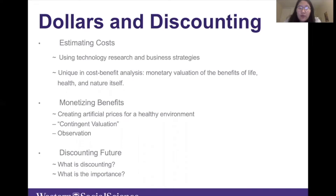By studying what people would like to pay for, economists set artificial prices for health and environmental benefits. One popular method is called contingent valuation — directly asking people how much they are willing to pay to protect things they cannot buy from a store. Another method infers what people would like to pay from observation of their behavior in other markets. Pricing life and the environment can derive the real value of reducing a risk of death, which is the most important thing in studying environmental regulations.